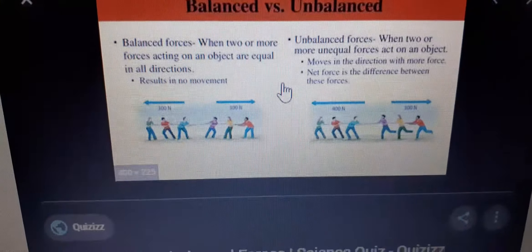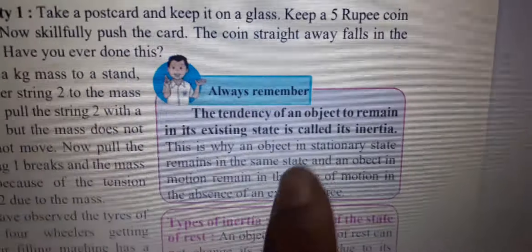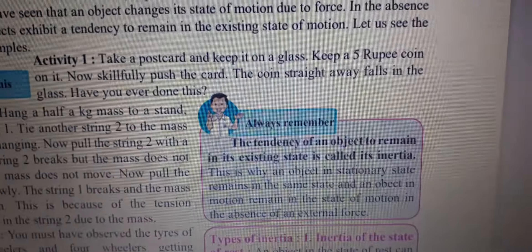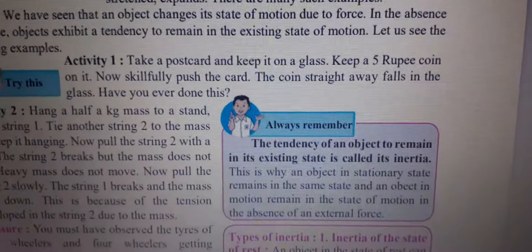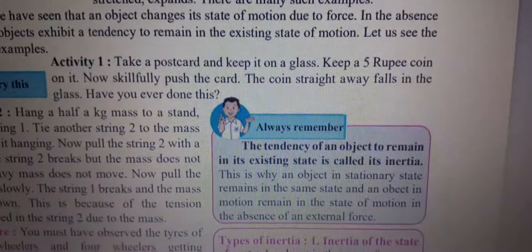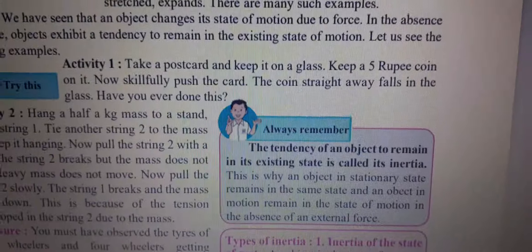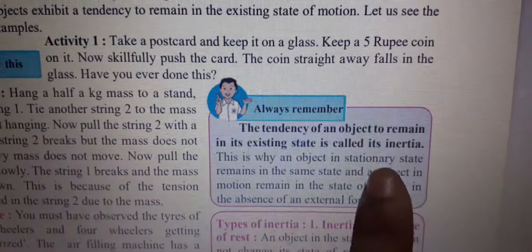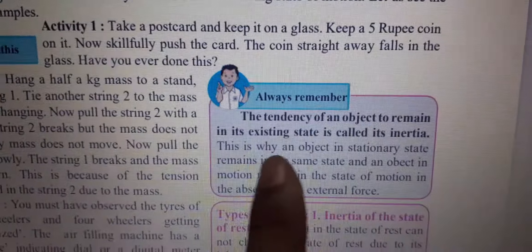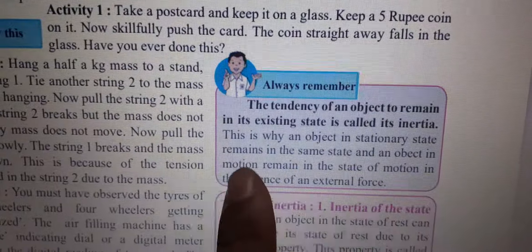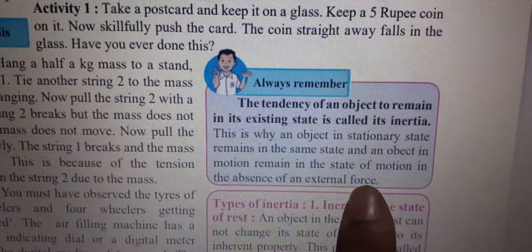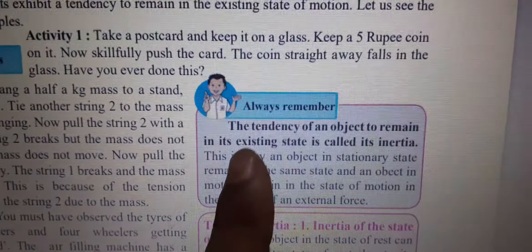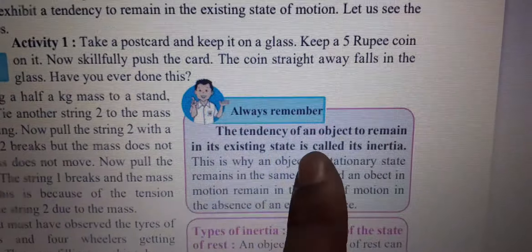Next, the tendency of an object to remain in its existing state is called inertia. This is why an object in a stationary state remains in the same state, and an object in motion remains in the same state of motion, in the absence of an external force.